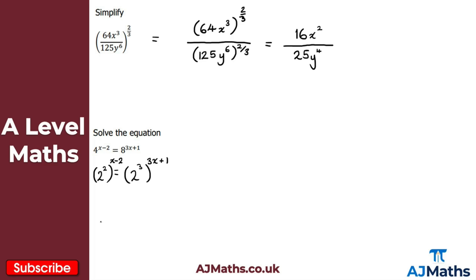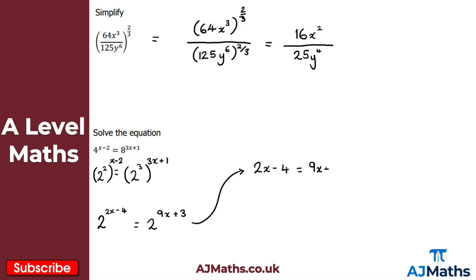Simplifying both sides by multiplying the powers: the left-hand side gives 2 to the power of 2x minus 4, and the right-hand side gives 2 to the power of 9x plus 3. Because the bases are the same and they're equal in value, the powers must be equal: 2x minus 4 equals 9x plus 3. Subtracting 2x and 3 from both sides gives 7x equals minus 7, so dividing by 7 gives x equals minus 1.